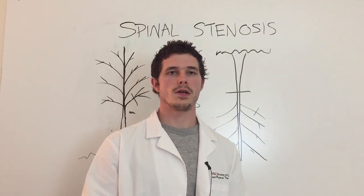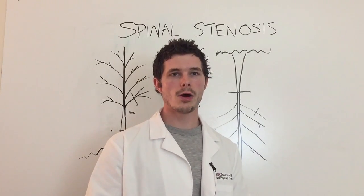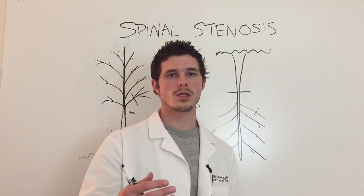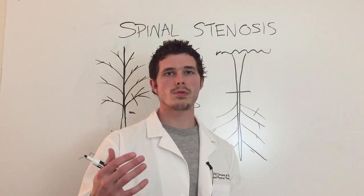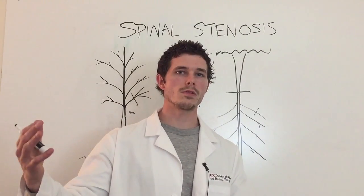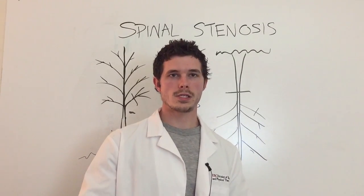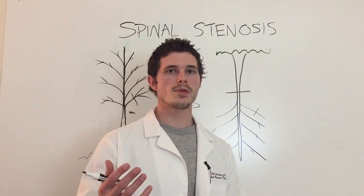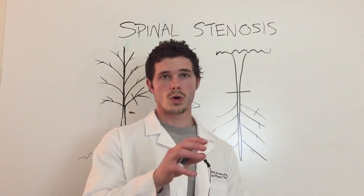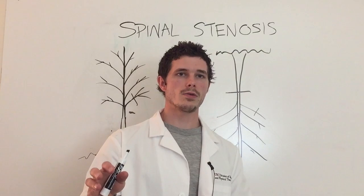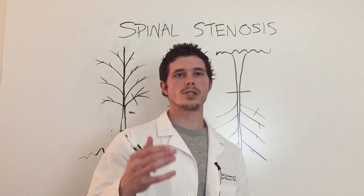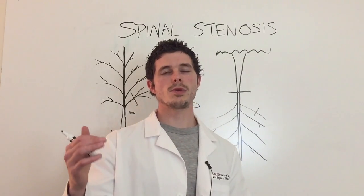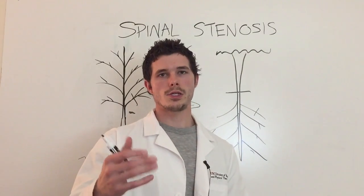So hopefully that helps. The two main types are central and foraminal spinal stenosis. Remember, stenosis is just a narrowing of where the nerves exit the spine. Hopefully this was helpful — you can do the same thing at home to better understand it, or comment and post your questions below, or reach out to me directly at charliejohnsondpt@gmail.com and share your story.